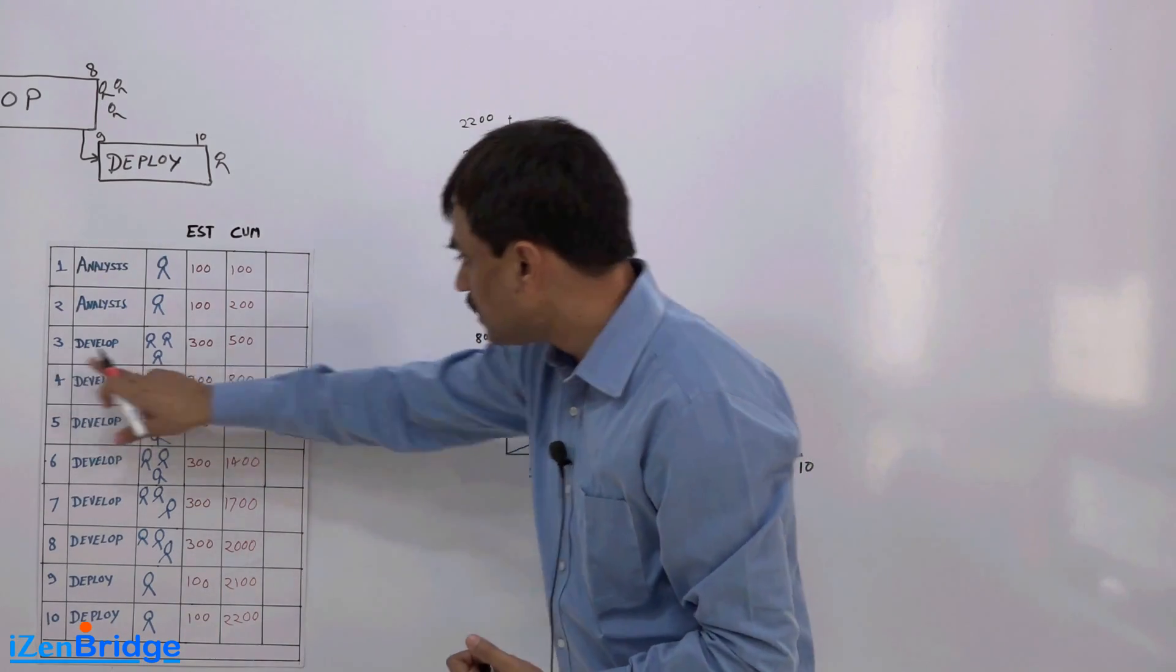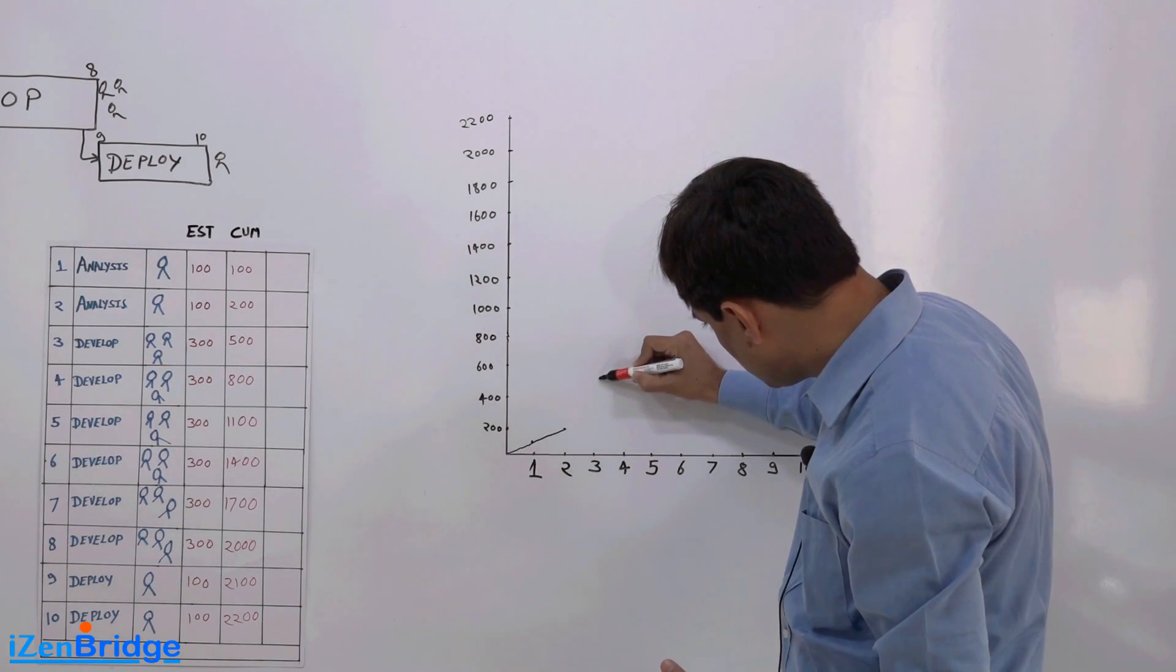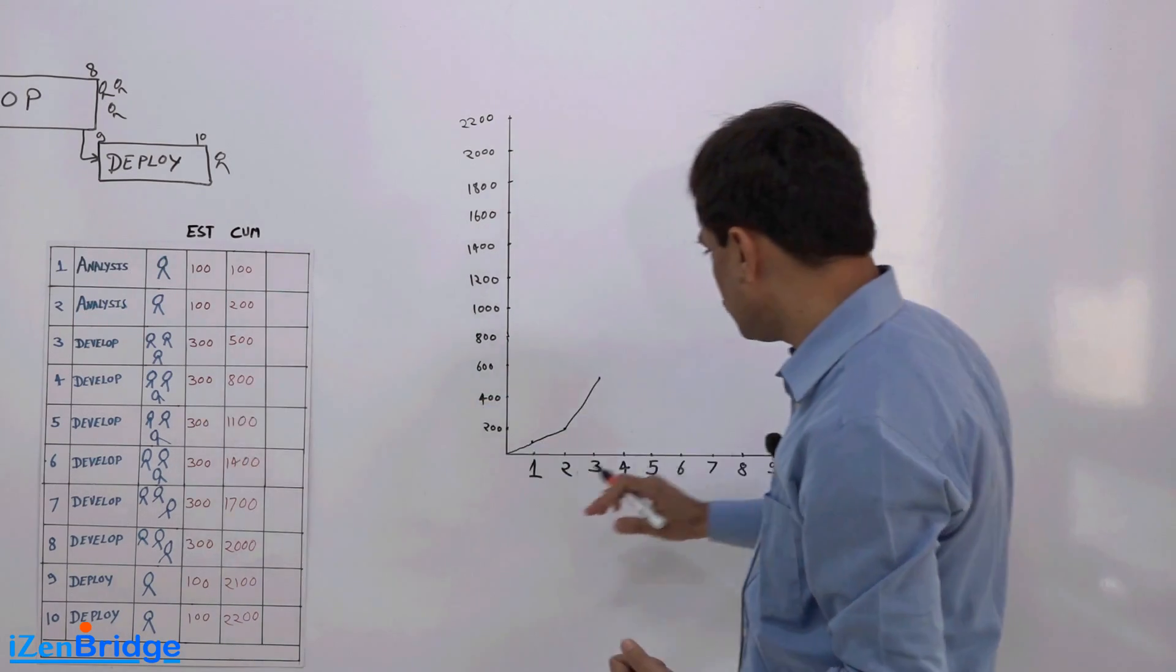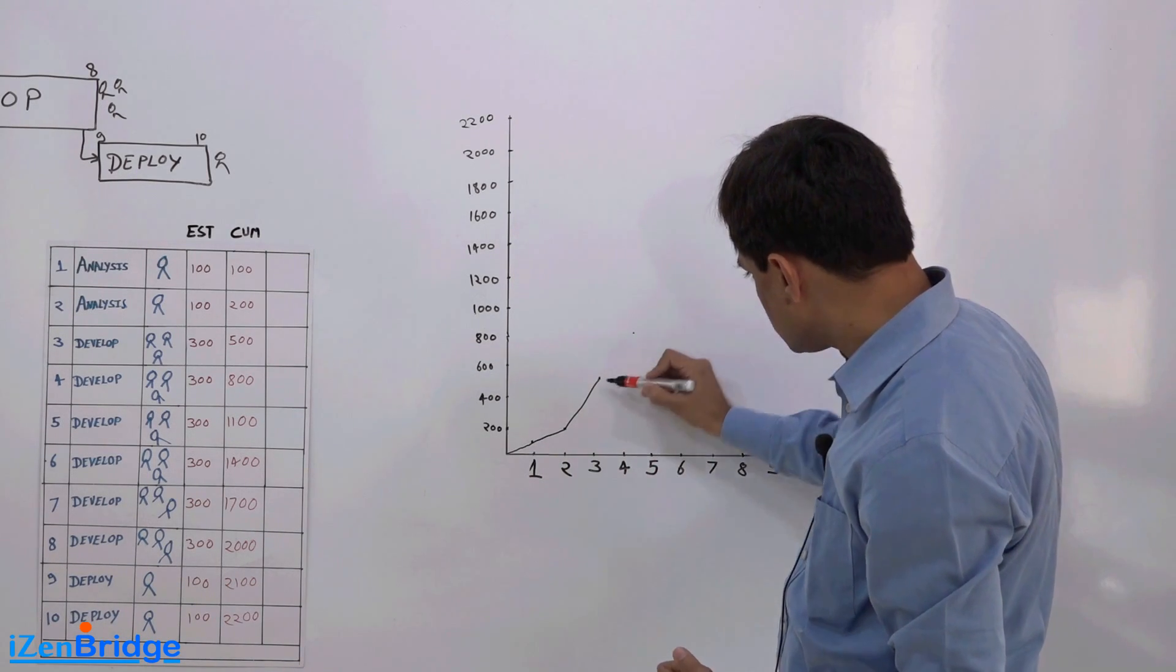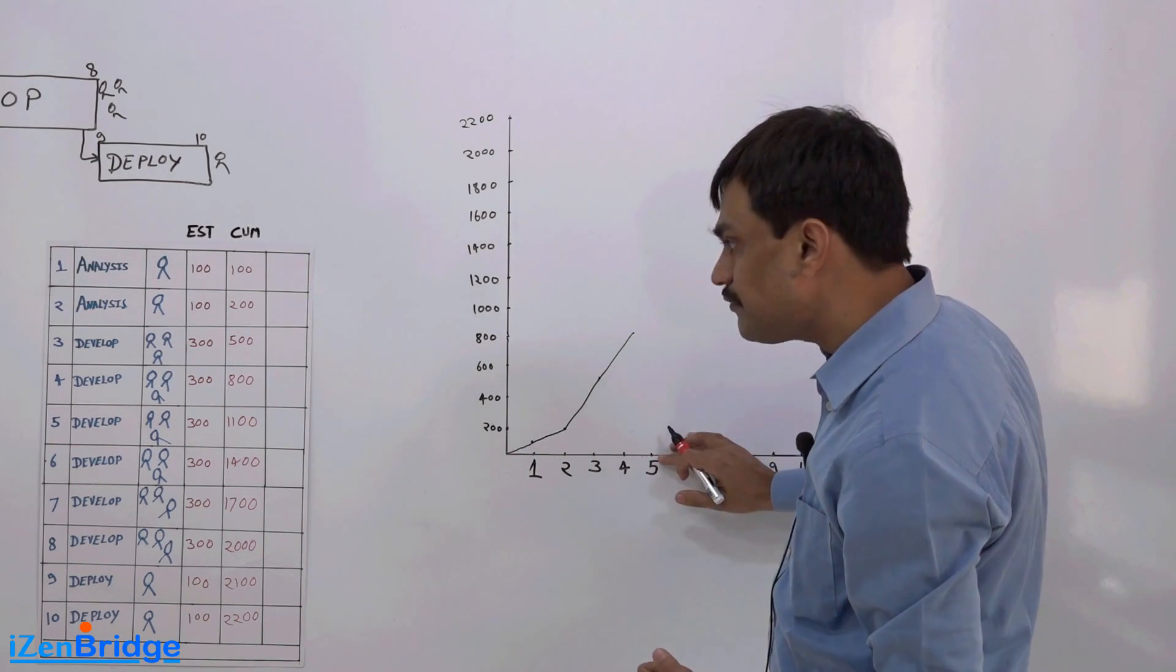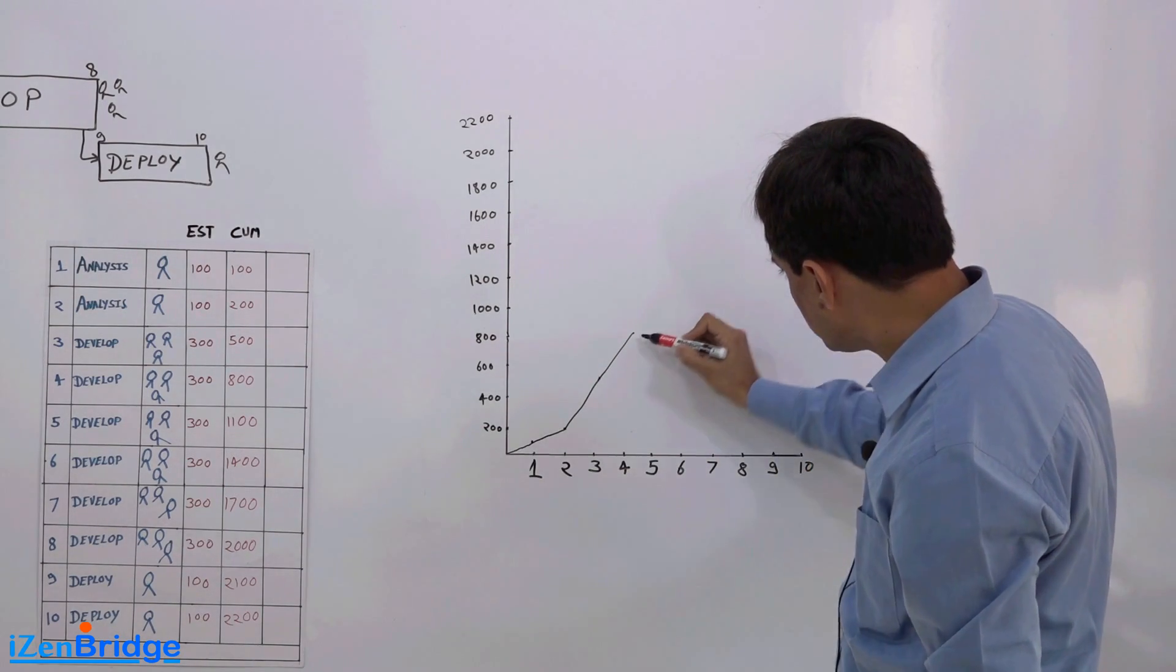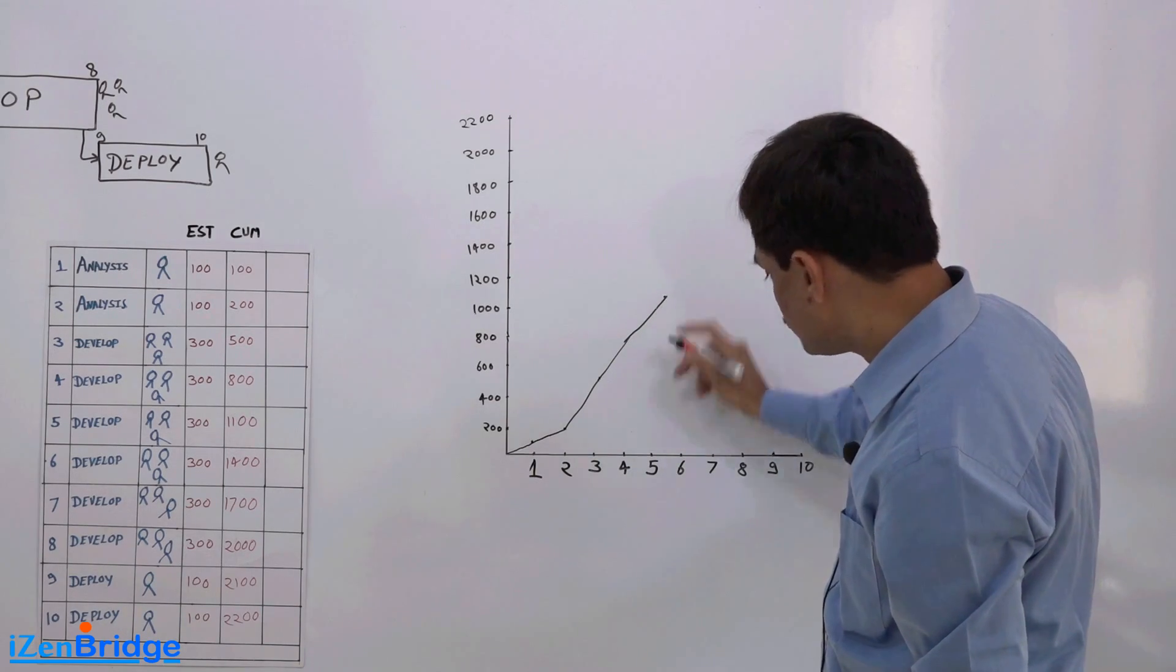By end of 3 I'm done with 500. So I will come somewhere here. By end of day 4 I'm done with 800, something like this. By end of day 5 I'm done with 1100. So day 5 somewhere here 1100. You can see that this line keeps coming at 1100.